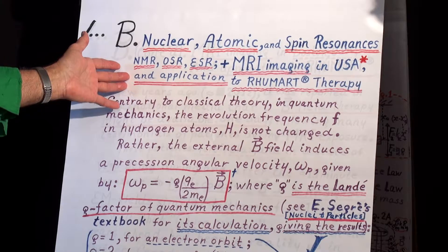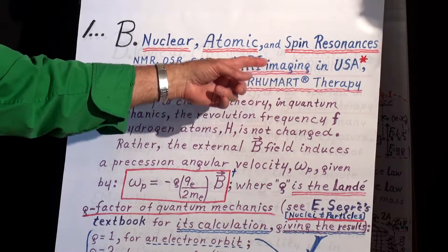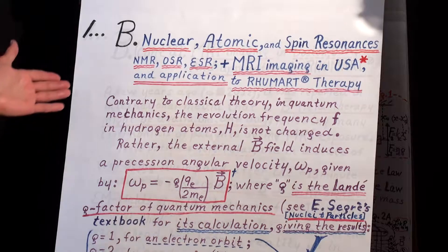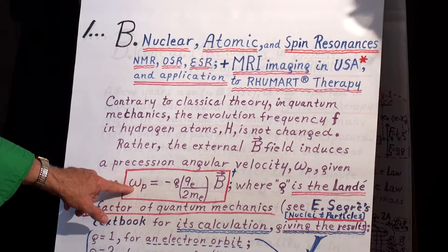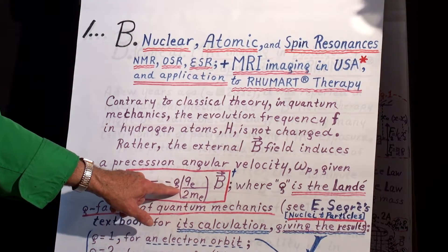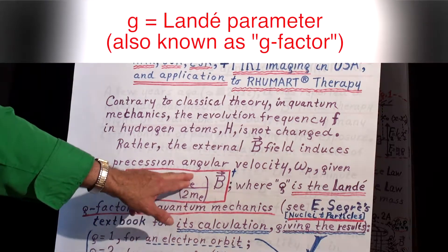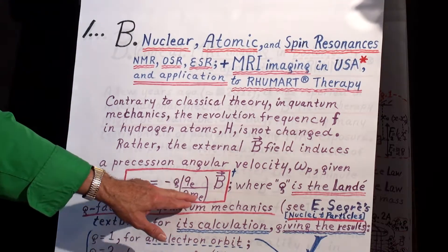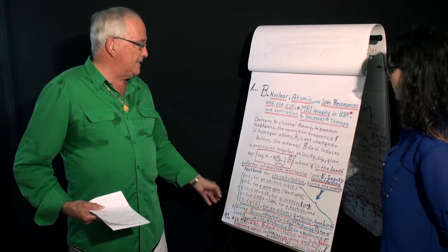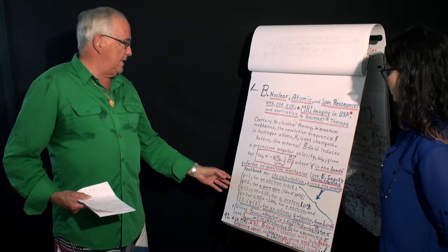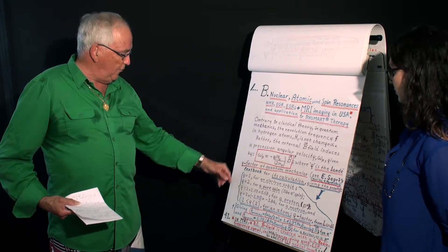But this is more interesting. This is nuclear atomic and spin resonance with MRI imaging in USA, an application to rheumatoid therapy. Contrary to classical theory, we have this equation. This is the angular frequency. Here, G is what is called the Lande parameter with electric charge, the mass and magnetic field. So anyway, the J-factor of quantum mechanics. And I gave Segre as a reference in nuclear and particles book. So I gave the different value for the parameter.